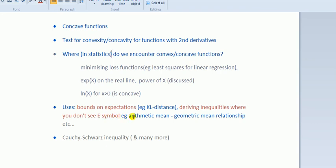Deriving inequalities where you don't see the expectation symbol, for example, looking at the relationship between the arithmetic mean and the geometric mean. You can use Jensen here to show that this guy is bigger than or equal to this guy. I don't know who watches my videos, but if you have some other application, maybe you could share it with us.